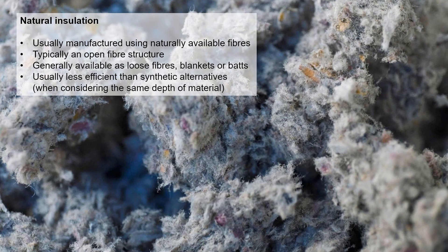Natural insulation is usually less efficient than synthetic alternatives when considering the same depth. So if you had 100mm of natural insulation and 100mm of synthetic insulation, the efficiency across that depth would likely be less for the natural insulation. The picture we're looking at just now is actually recycled newspaper — broken up into individual fibers, with little bits of colored ink and some cotton fibers in there. It functions very much like a jumper.